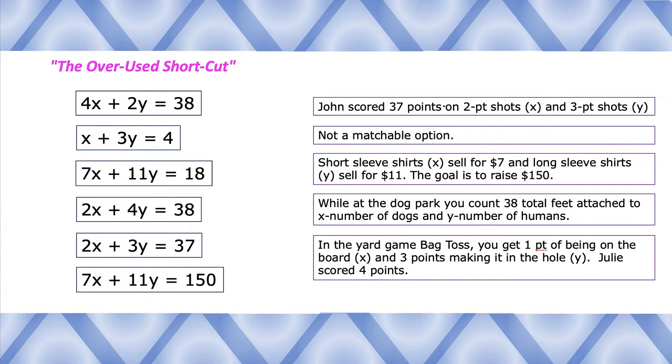So we go, says John scored 37 points on two-point shots X and three-point shots Y. So we're looking for a 2x and a 3y situation adding to 37 points, and I think we have the winner right here. We go 2x plus 3y equals 37, so John is gonna have this equation match to his situation.